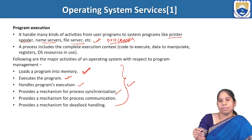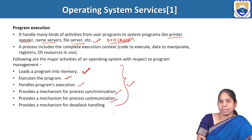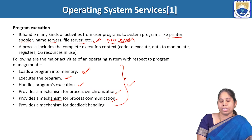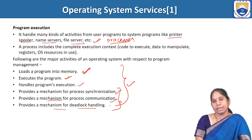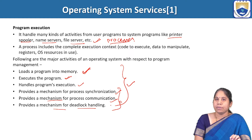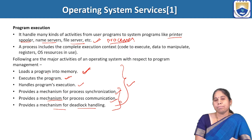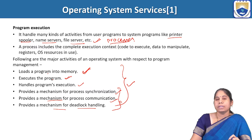The operating system provides a mechanism for process synchronization and also for process communication, because processes must communicate to complete execution. It also provides a mechanism for deadlock handling. Synchronization, communication, and deadlock handling will be covered in later chapters. To summarize, under program execution, the OS loads the program, executes it, handles execution, and provides mechanisms for process synchronization, process communication, and deadlock handling.